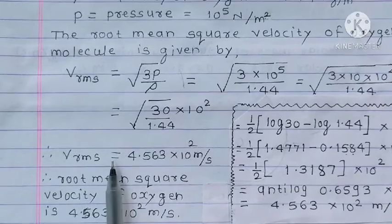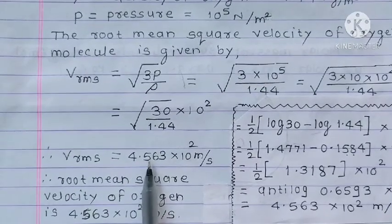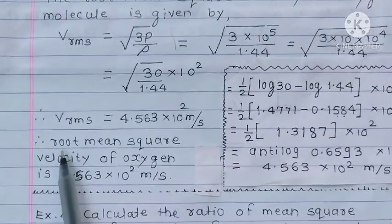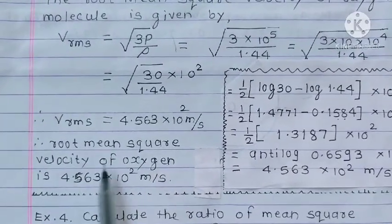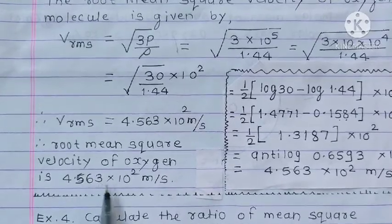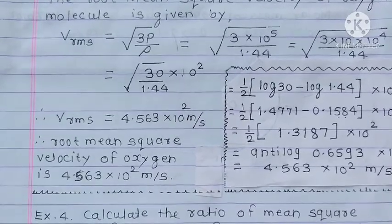So Vrms is equal to 4.563 into 10 raised to 2 meter per second.